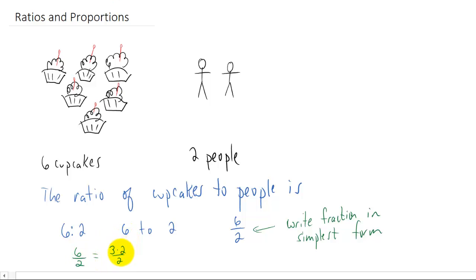And the reason we do that is because we can now cancel a 2 from the numerator and a 2 from the denominator. And that leaves us with a 3 over 1. And units are always nice. So this is 3 cupcakes per 1 person.